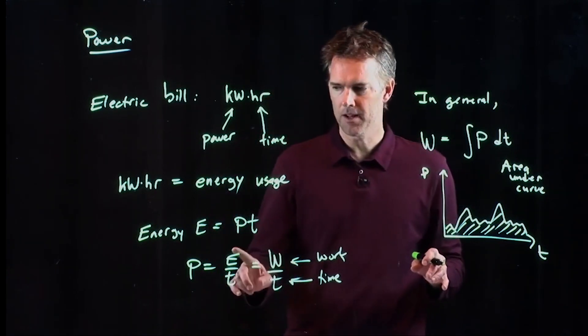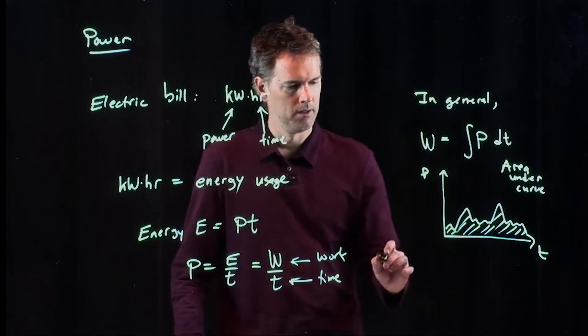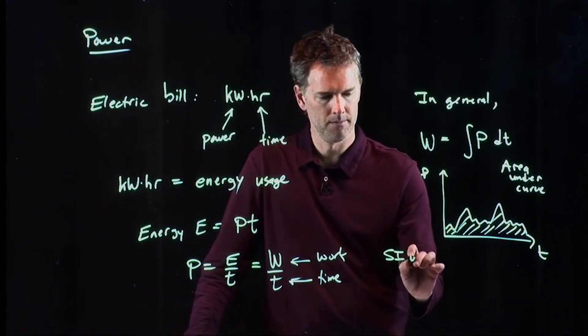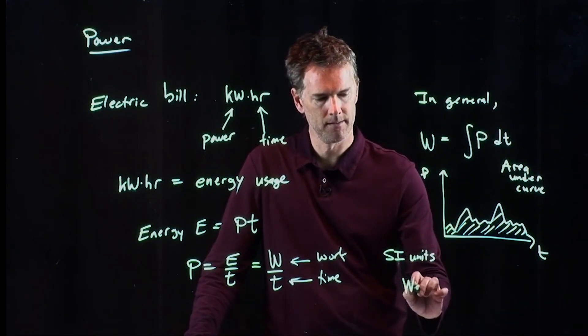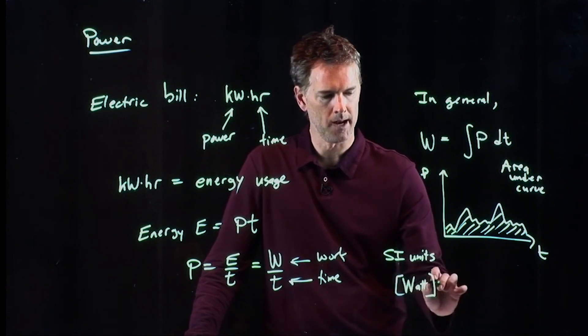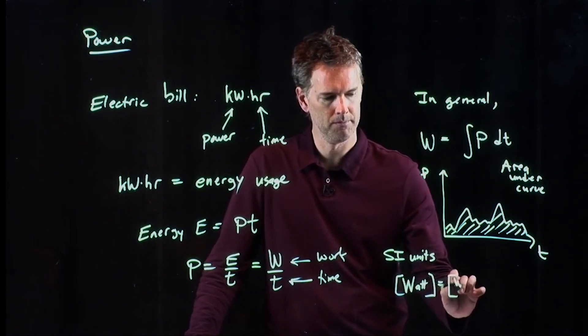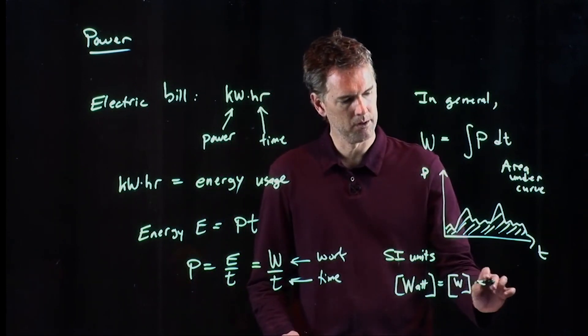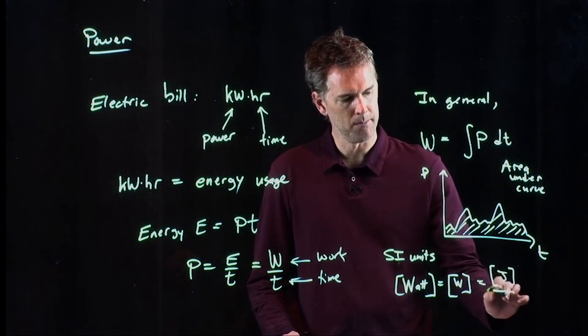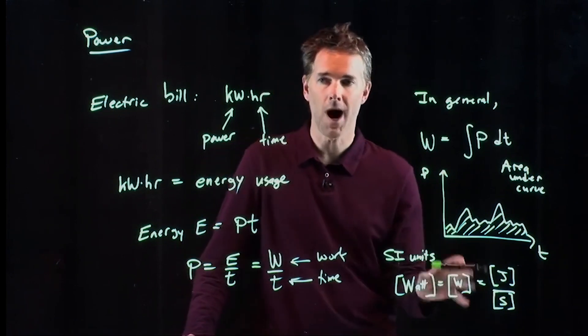Okay, the SI units of power is the watt. And we write it with a capital W. And it is apparently work, which we know is joules, divided by time, which is second. That's a watt, it's a joule per second.